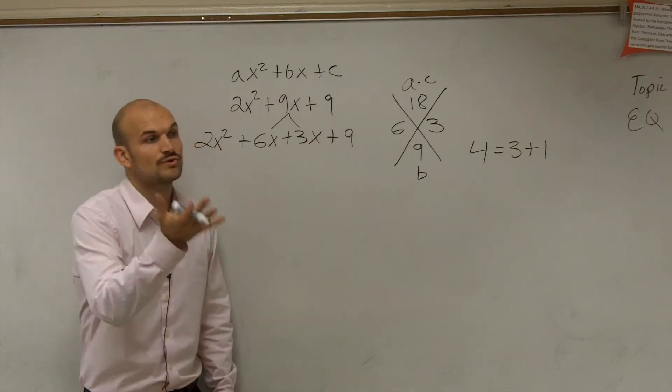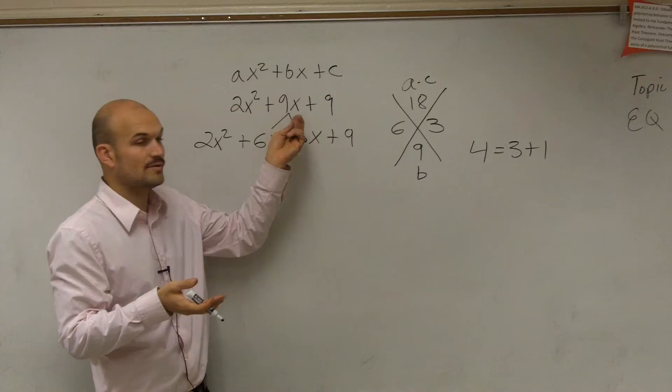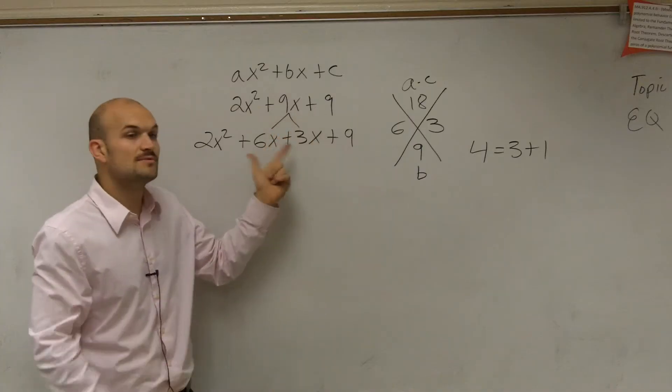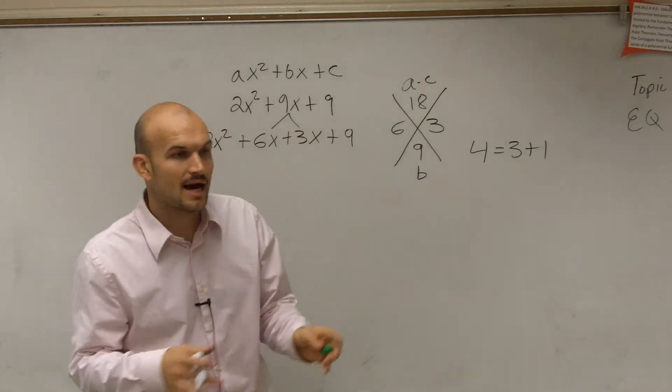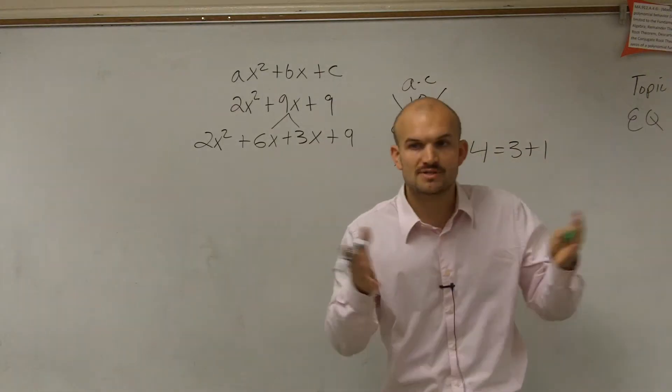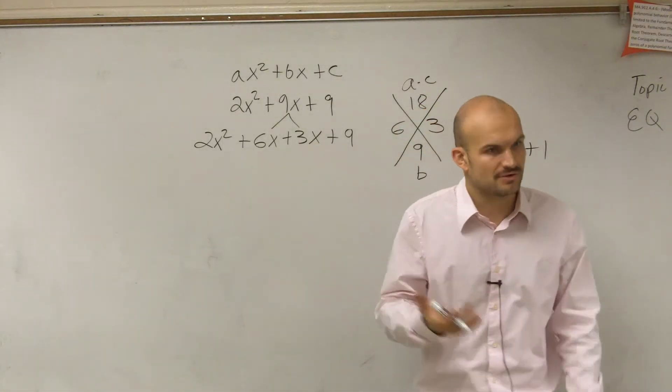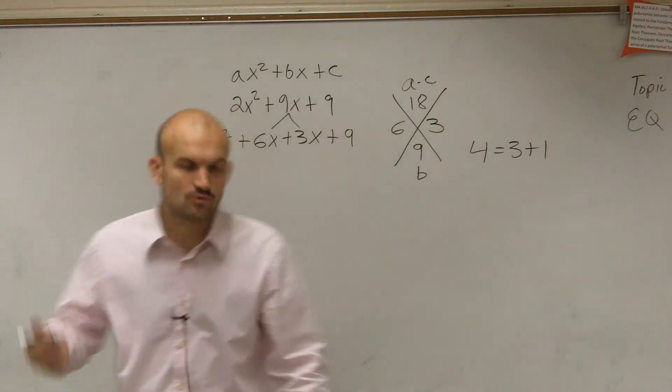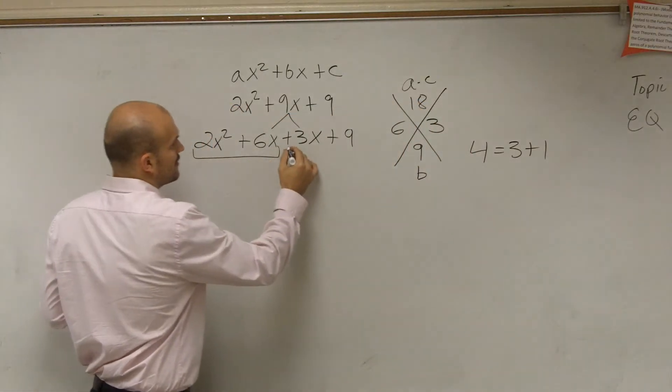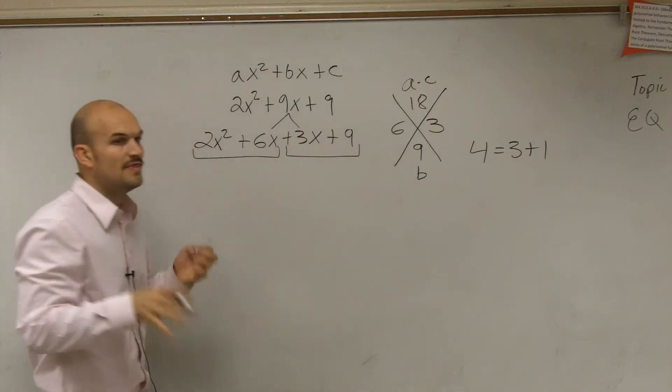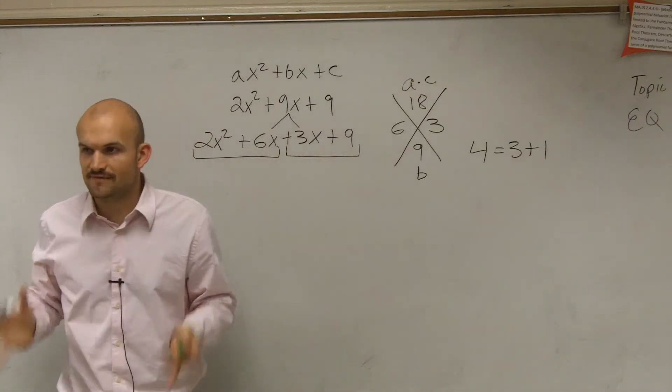The reason why I can rewrite it like this is because now what I've done is I've gone from 3 terms to 4 terms. And when you have 4 terms, we use factoring by grouping, which means we group our first two terms and we group the last two terms.